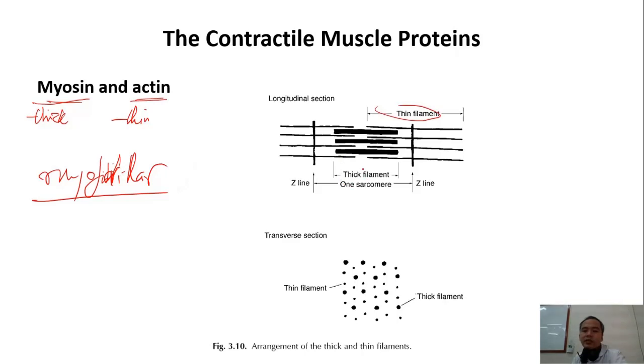You have thin filament, you have thick filament, and this one between two Z-lines is one sarcomere. And if you cut here, somewhere here, and then you will see like this. So you have thick and thin filament.